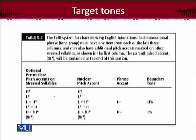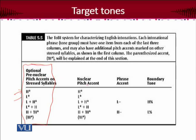This is the table through which intonation is described. If you can see the first column, there is a possibility of six types of optional pre-nuclear accents, because the nuclear pitch is the pitch accent — the tonic accent — on the basis of which you would finally describe the tone. So the tonic accent is given here. But before that, if there is in the intonational phrase some additional, which is optional, optional information given, you can talk about them.